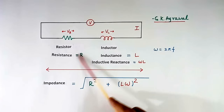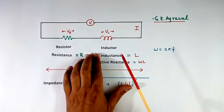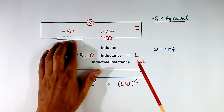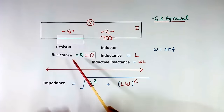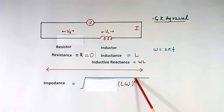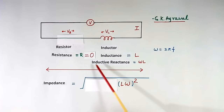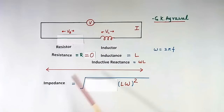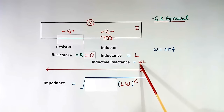Now suppose the value of R becomes 0. This will look like a short, so I will short this. When R becomes 0, the R term disappears. So impedance will be equal to √((ωL)²), and the square cancels with the square root, leaving only ωL — that is nothing but inductive reactance. So when R equals 0, impedance and inductive reactance are both equal to ωL.